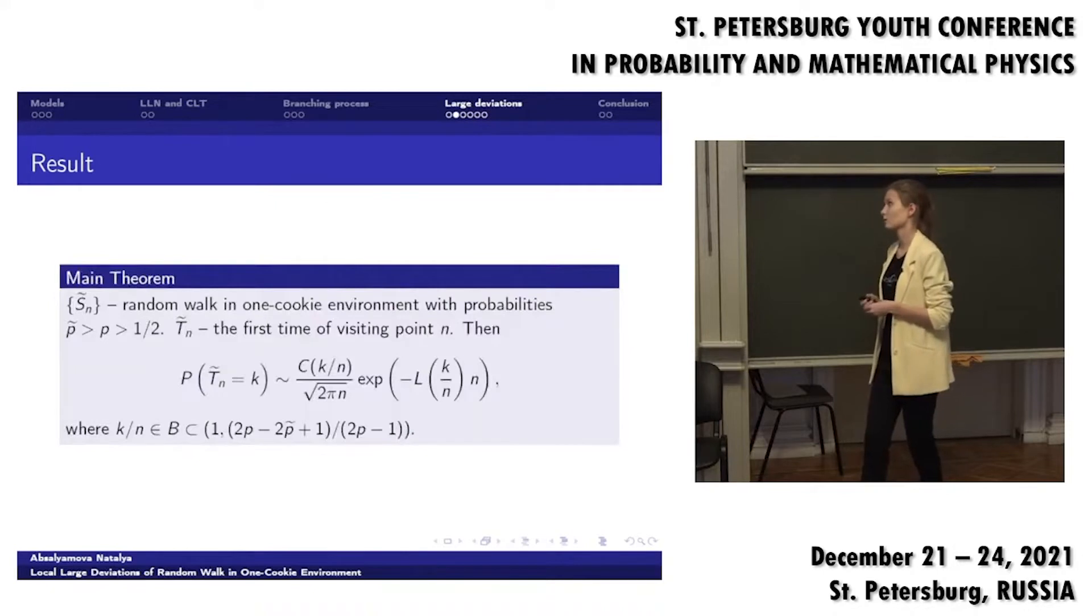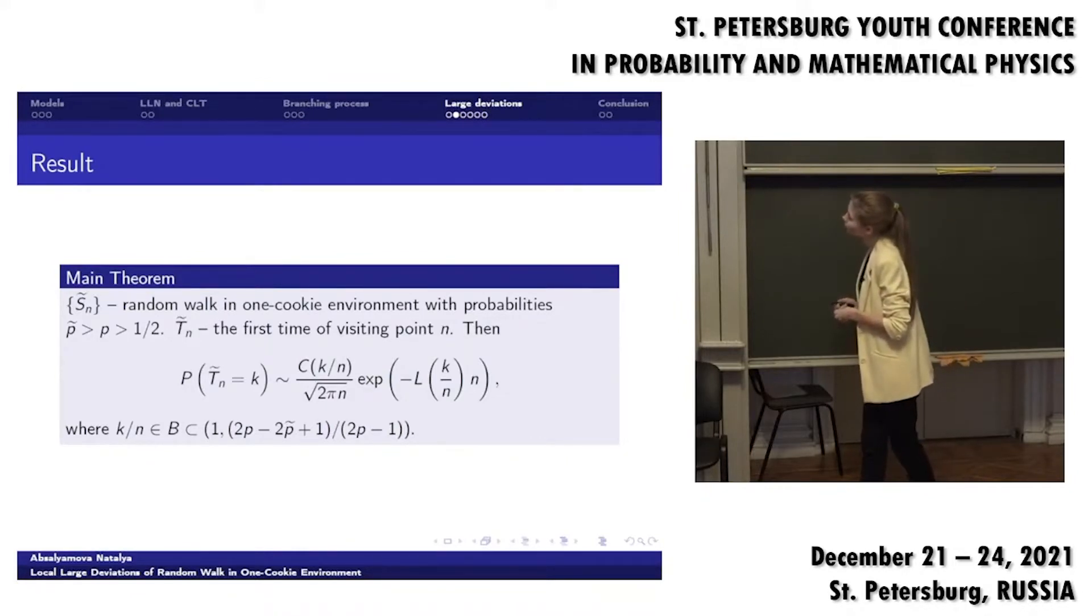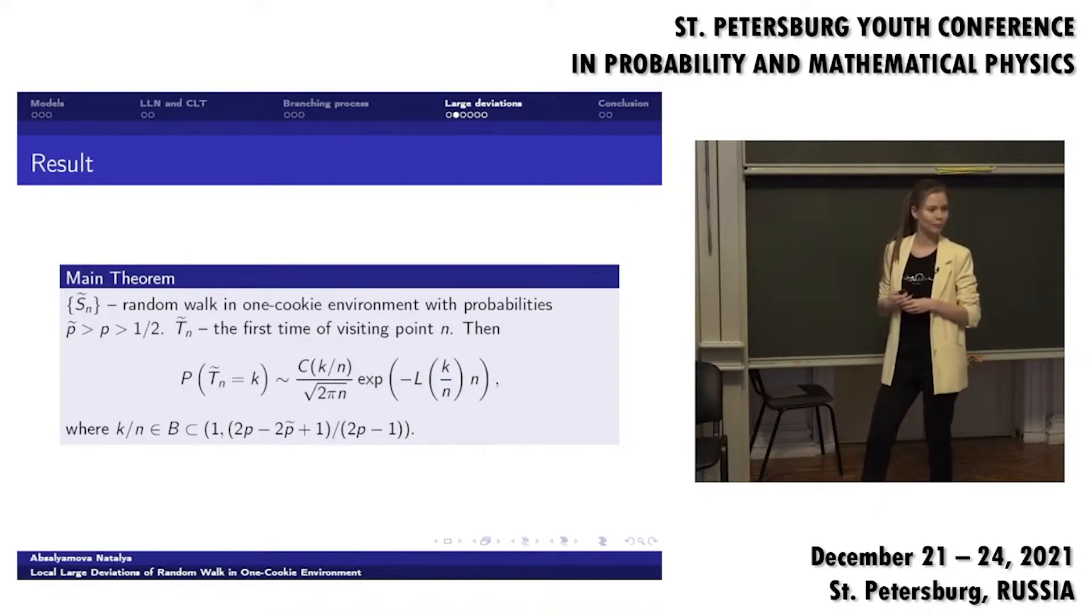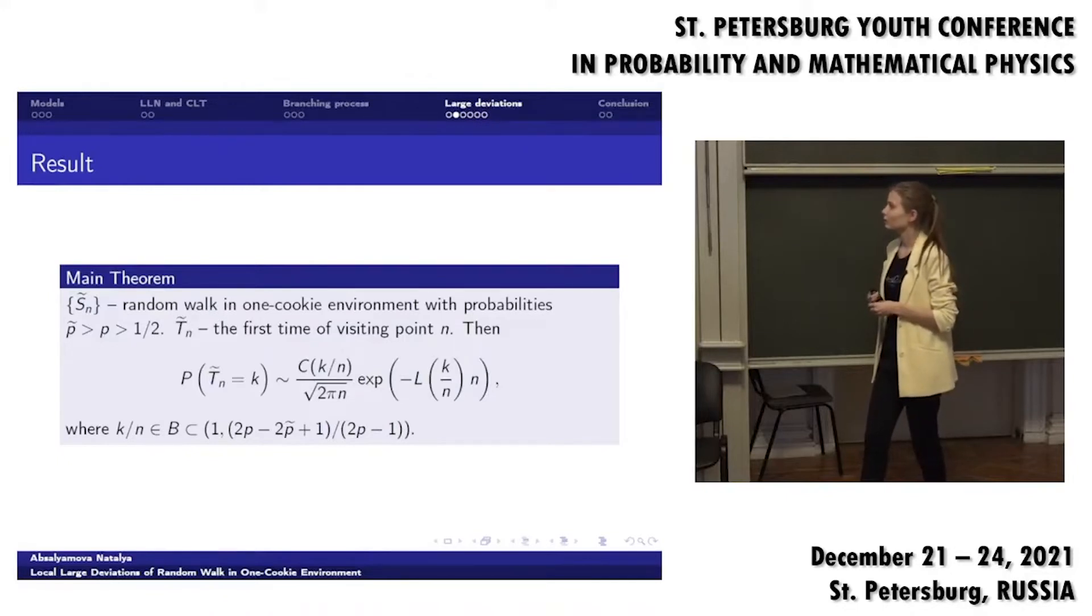Can you please return to the previous slide? Yes. Your interval in the last string seems something strange, because you have 2p minus 2 tilde p plus 1 divided by 2p minus 1, so it is less than 1. I actually think that this should be vice versa, because k over n should be less than 1. No, no. We have now hitting time, so k must be more than n.